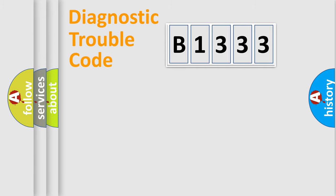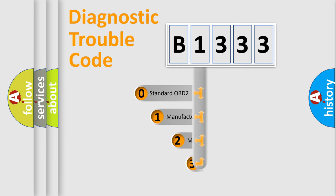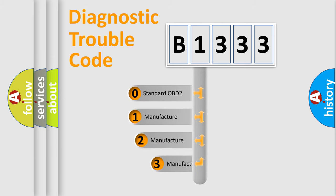The four basic units are: Powertrain, Body, Chassis, and Network. This distribution is defined in the first character of the code.